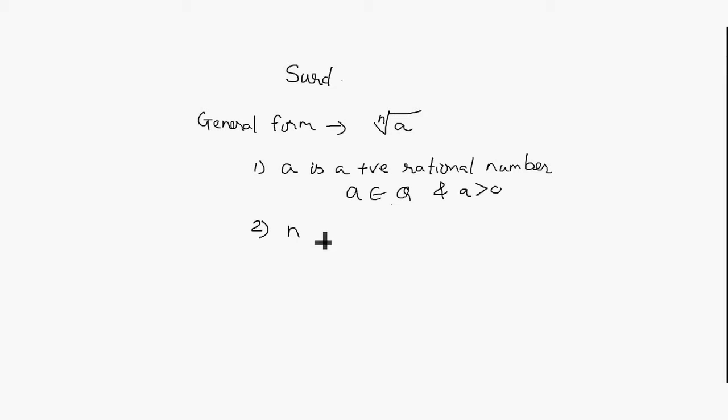If we see n, n is a natural number and its value should be greater than 1. That is, n belongs to natural numbers and n is greater than 1, so n can be 2, 3, 4, and so on. And as a whole, nth root of a - this term - should be irrational in nature.